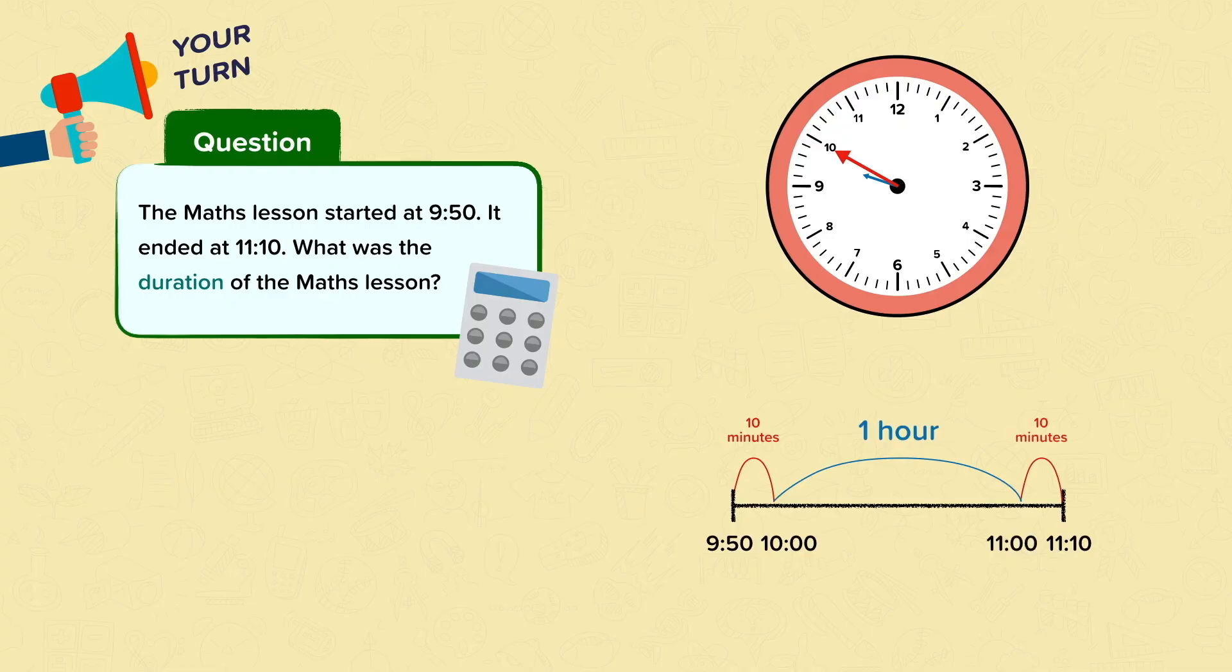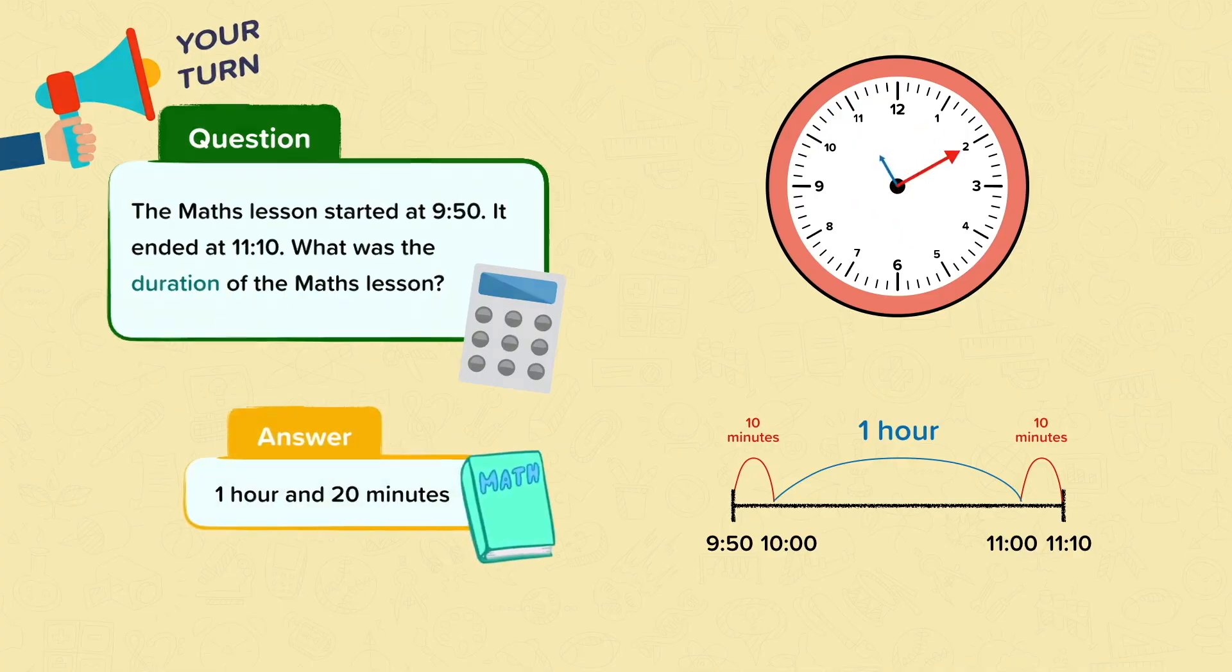This was the simplest way to count it out on our number line. We can add 1 hour and 2 lots of 10 minutes together. That makes 1 hour and 20 minutes. The duration of the maths lesson was 1 hour and 20 minutes.